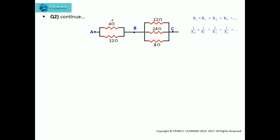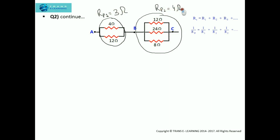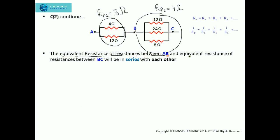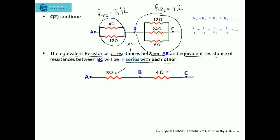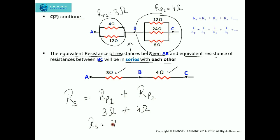So the equivalent resistance across AB was RP1 = 3 ohm and the equivalent resistance across BC was RP2 = 4 ohm. These two will be in series with each other. Taking the equivalent resistance across AC as RS, it will be RP1 plus RP2, which is 3 ohm plus 4 ohm. So the final answer is 7 ohm.